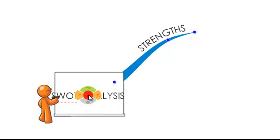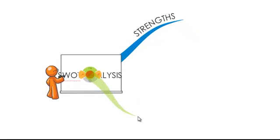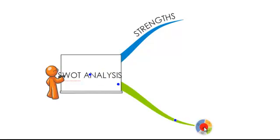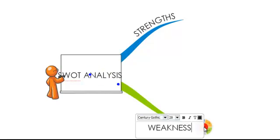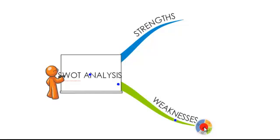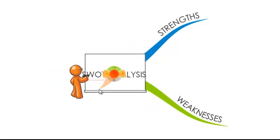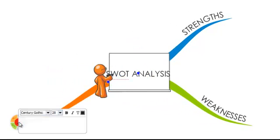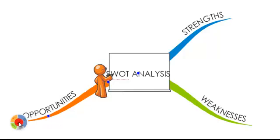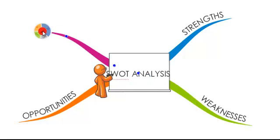If we return to our central topic, we can repeat the process again to create a second branch, which we will label Weaknesses. Using exactly the same simple process, we can create the final two branches of our SWOT Analysis map, which cover Opportunities and Threats.